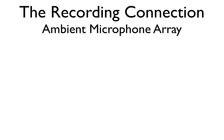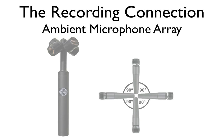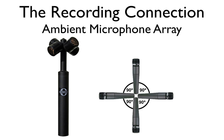Let's talk about the surround ambient microphone array. This is actually one of the easier ways to record in surround. All that is needed is four cardioid microphones placed 90 degrees to each other, around 21 to 25 centimeters apart. Using this technique, you can easily create a surround sound recording in many situations.